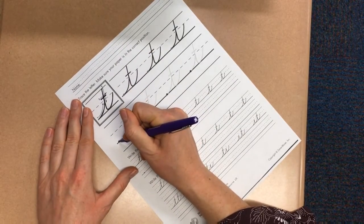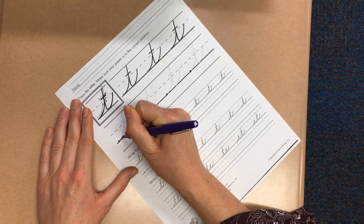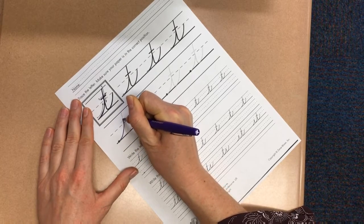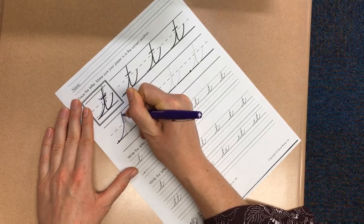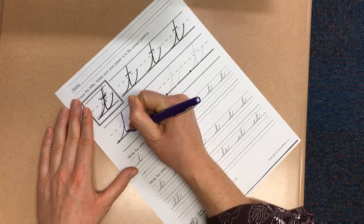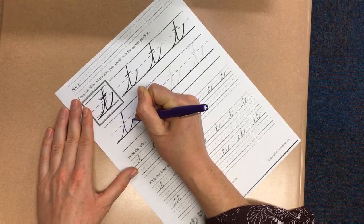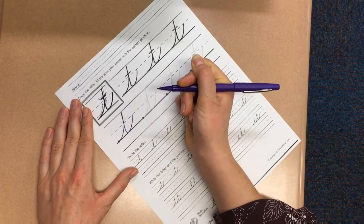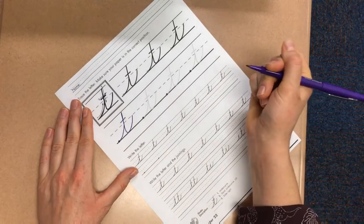Follow along as I do it again. You're going to start with an undercurve all the way up to the ceiling. You're going to slant back down on that exact same line. Then you're going to follow another undercurve until you get to the midline. Pick up your pencil, then cross your T.